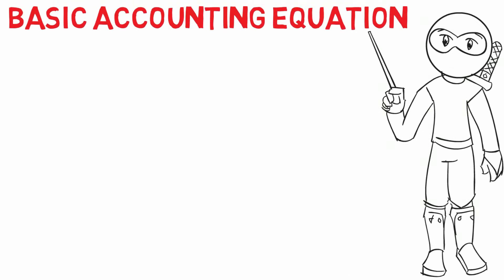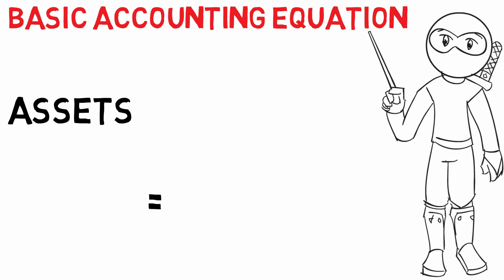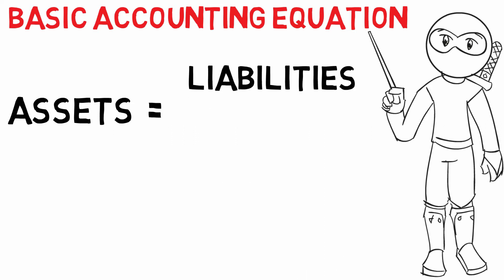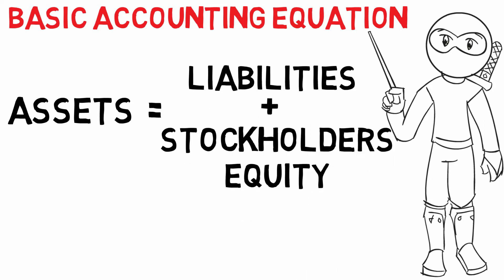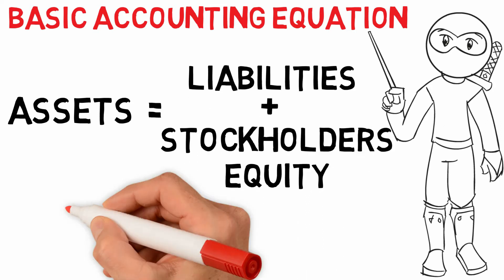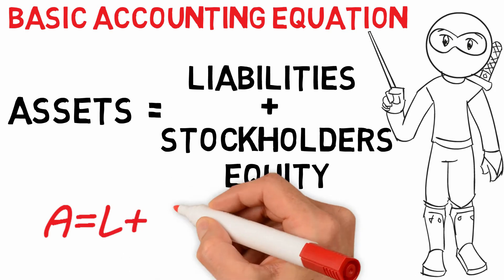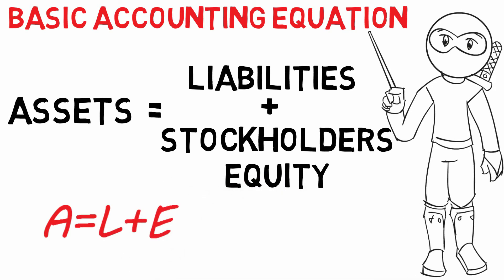Let's start with the basic accounting equation. Just cold hard facts, no need for persuasion. Assets equals liabilities plus the one and only stockholders' equity. Remember, A equals L plus E.